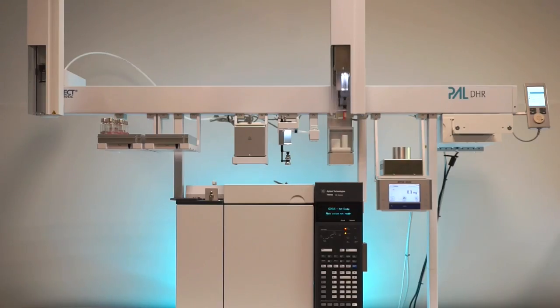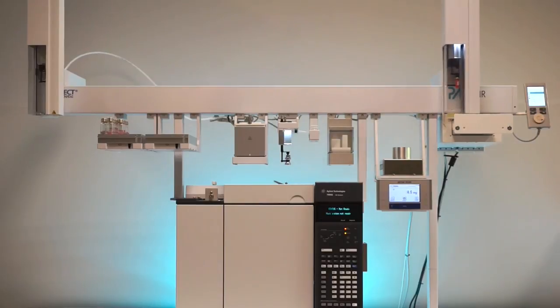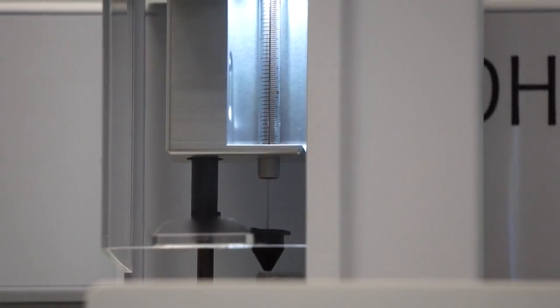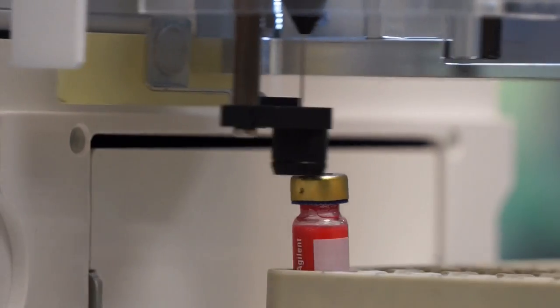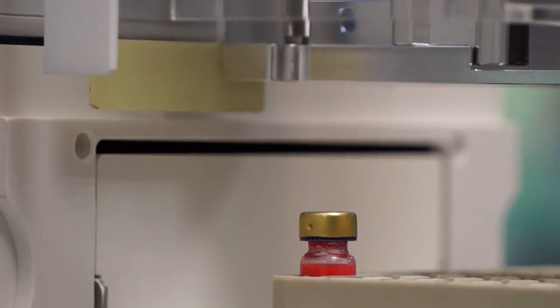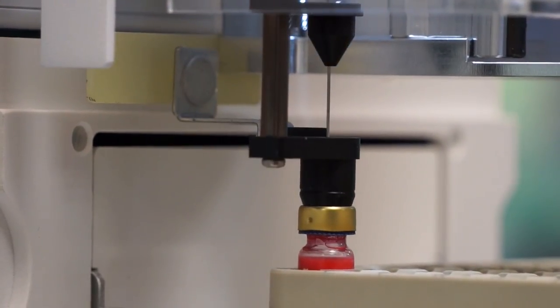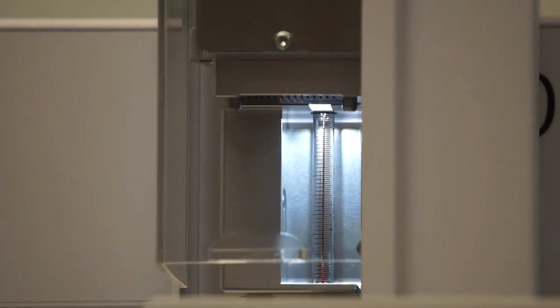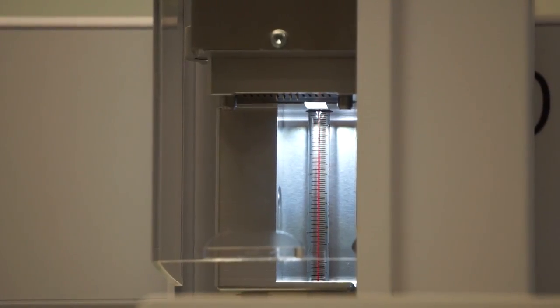Afterwards, the right arm of the autosampler puts the internal standard back into the cooled rack. The syringe is filled with the internal standard, taking into account the weight of the sample.